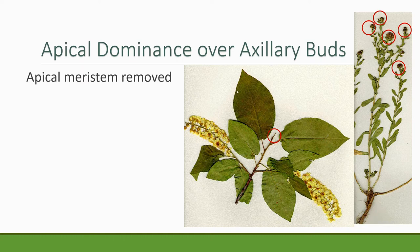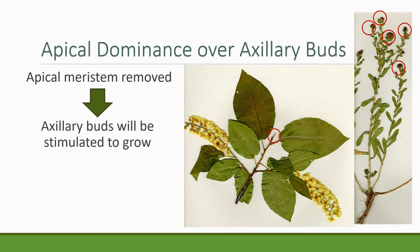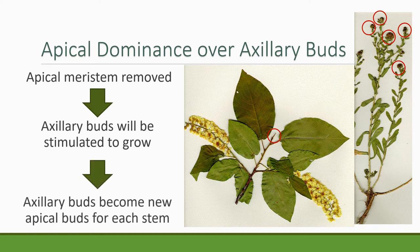Here's how apical dominance works: if the apical meristem is removed, then the axillary buds below it are stimulated to grow. So if you remove that top apical meristem, the shoots and flowering stems below the tip will start to grow because they're essentially released from that dominance. The dominance is created by a combination of hormones but also by controlling the resources available — that apical meristem dominates and controls growth in a stem or plant. When axillary buds are stimulated, they become their own apical bud for the stem they are at the tip of.